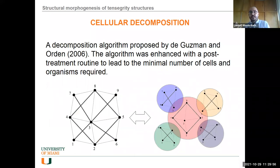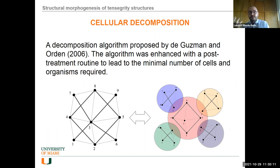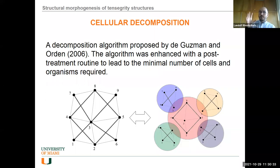For existing structures, you need a way to assess how many cells you have — this is not straightforward. The mathematicians provided an algorithm, but they didn't care about the number of unit cells. For us, it's important to find the exact amount and identify the locations. We worked with the mathematicians to develop a post-treatment routine that gives us the minimal number and identifies it for each cell. This is a side result of the broader work.